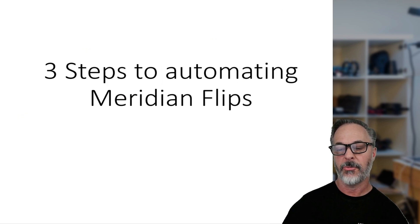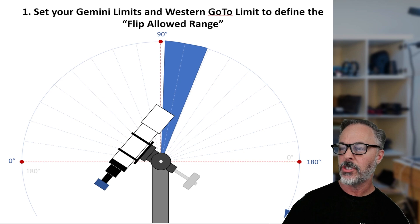So now let's look at the three steps to setting up an automated meridian flip. And these are kind of, again, more visual understandings to these insights that we're talking about. So the first thing is you need to set your Gemini limits and Western go to limit.